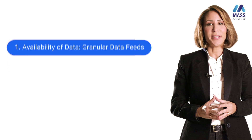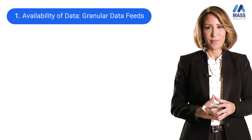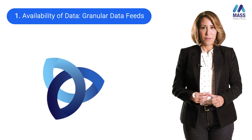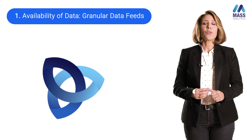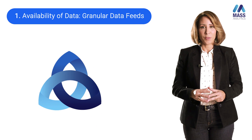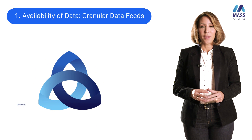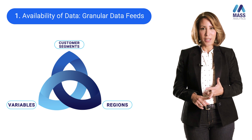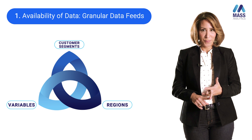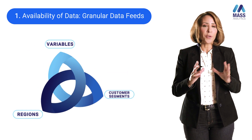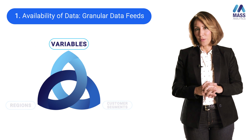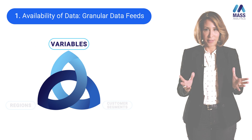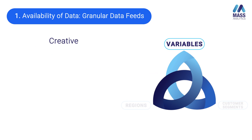Granular data feeds. Data granularity could be achieved thanks to the availability of three types of data: the variables, the regions, and the customer segment. When we focus on the first element, which is the variables, now we can have different cuts of the same variable.